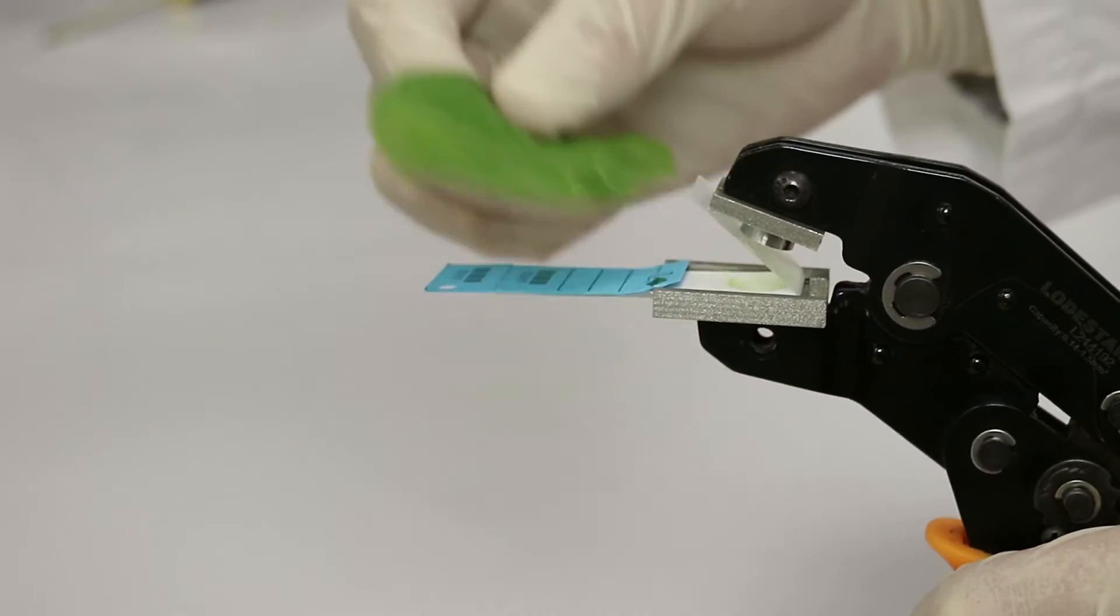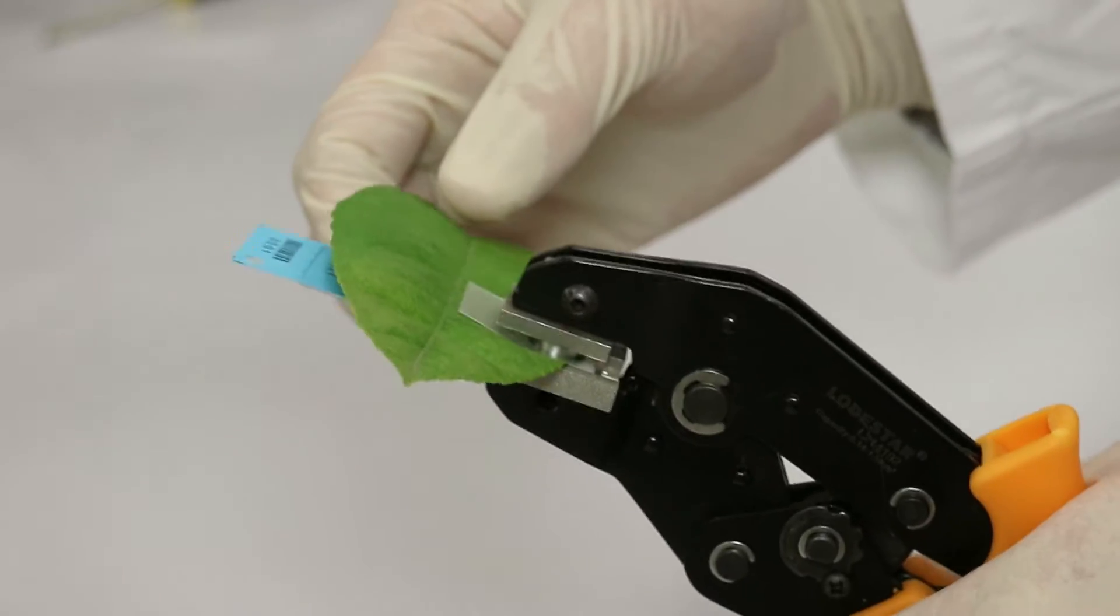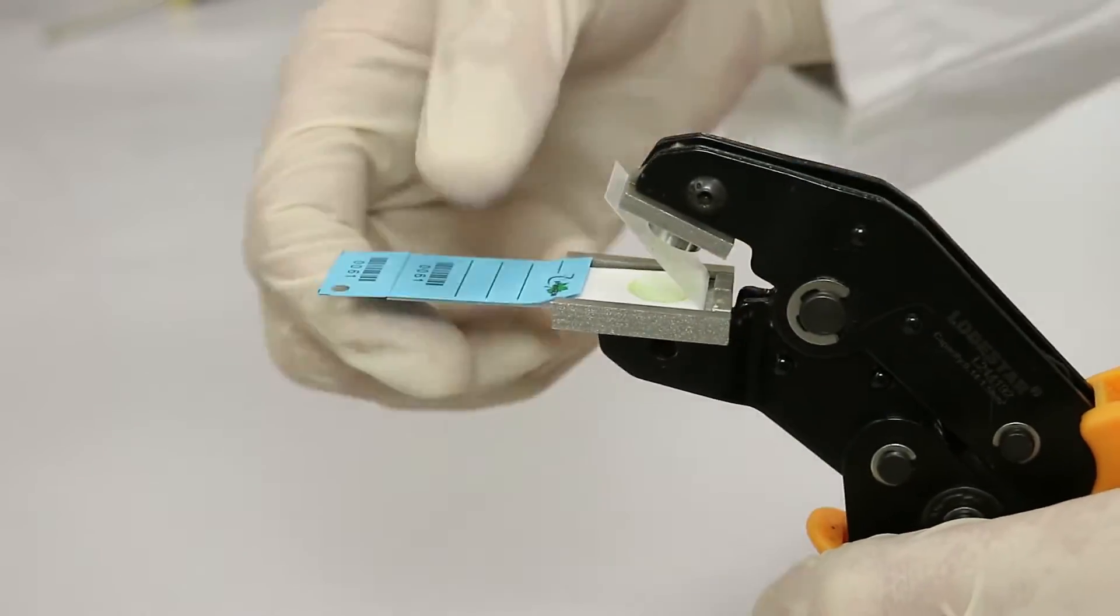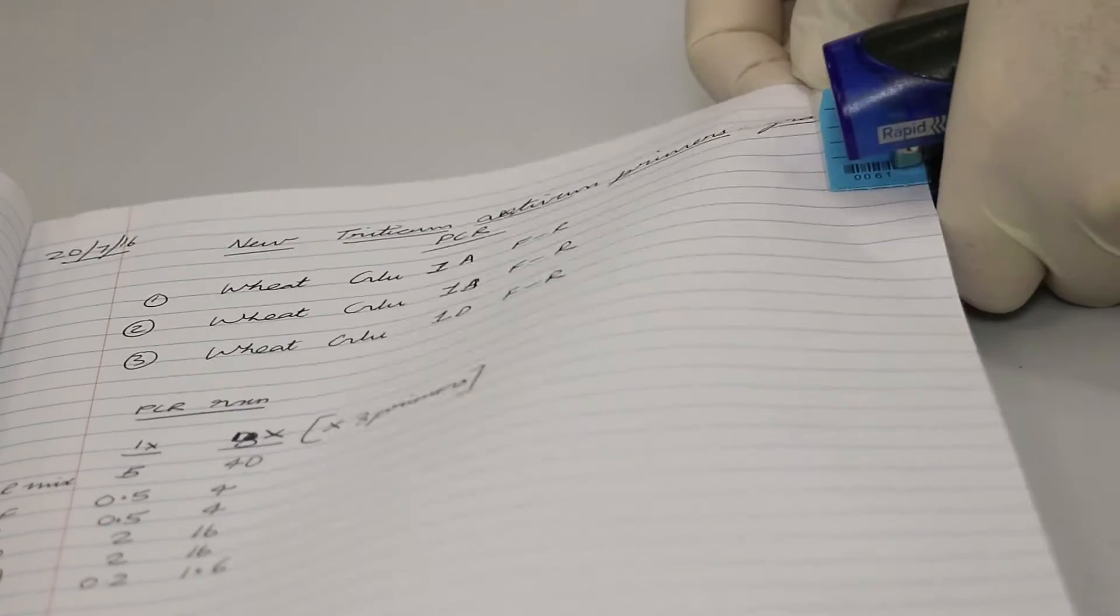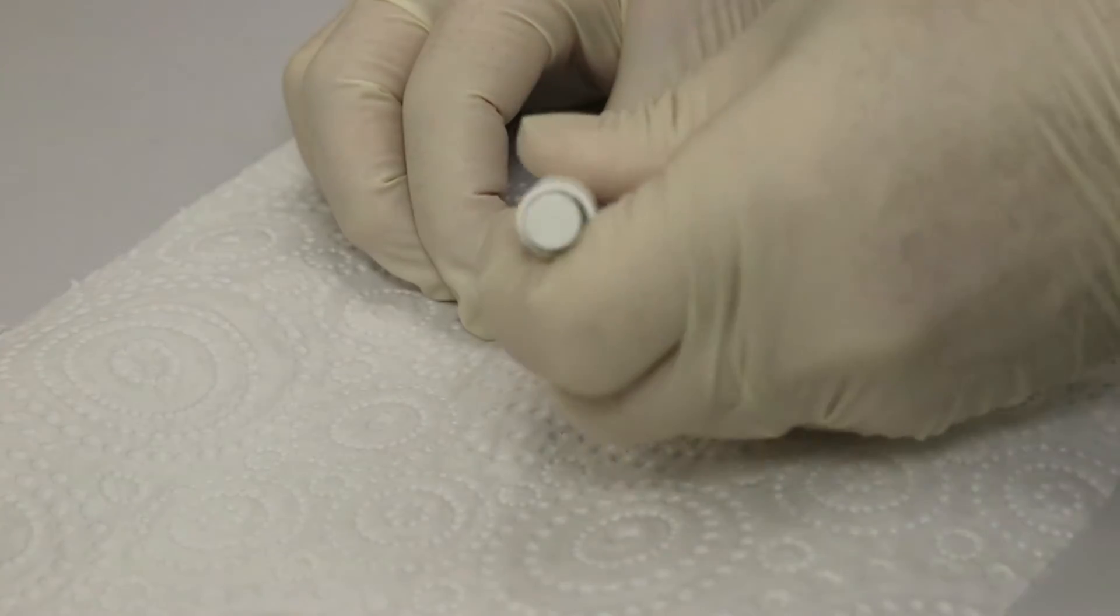A storage card is loaded into the collection tool and the plant material crushed onto the card. Sampling can be done in the laboratory, greenhouse or even at the farm. Cards can be set aside for long term storage or can be processed immediately.